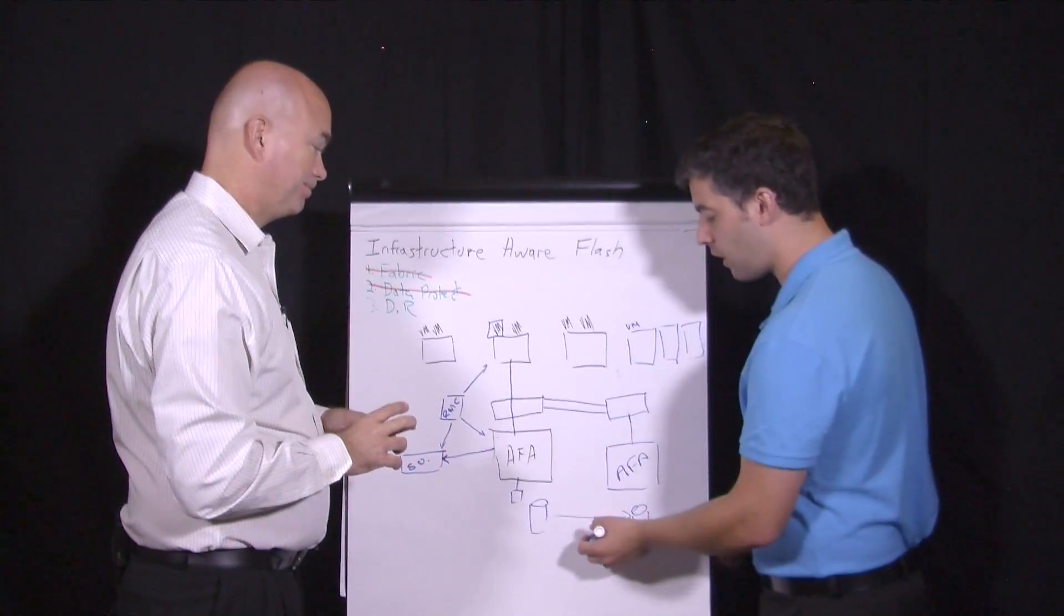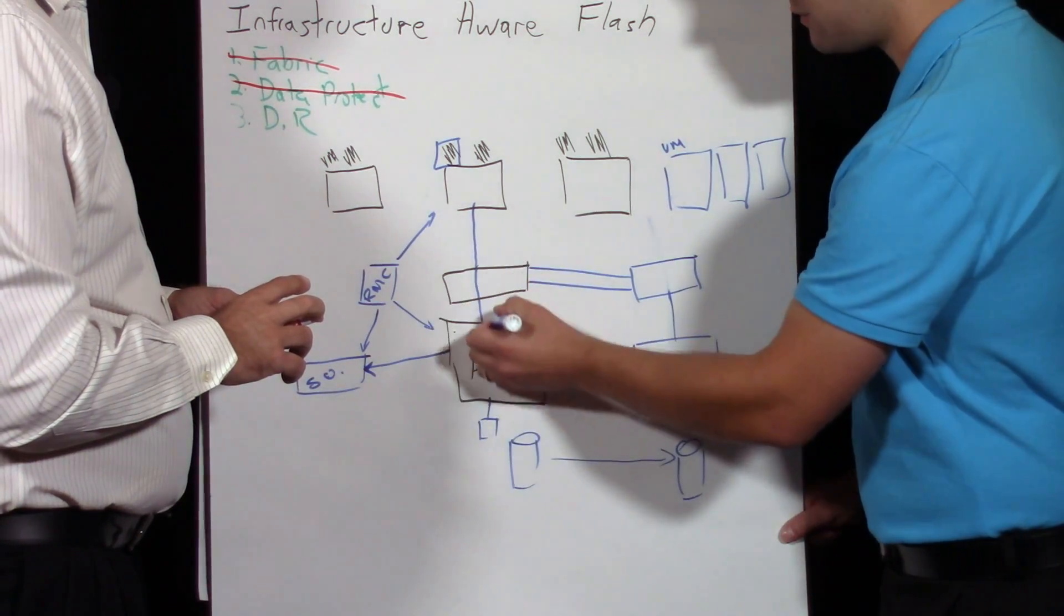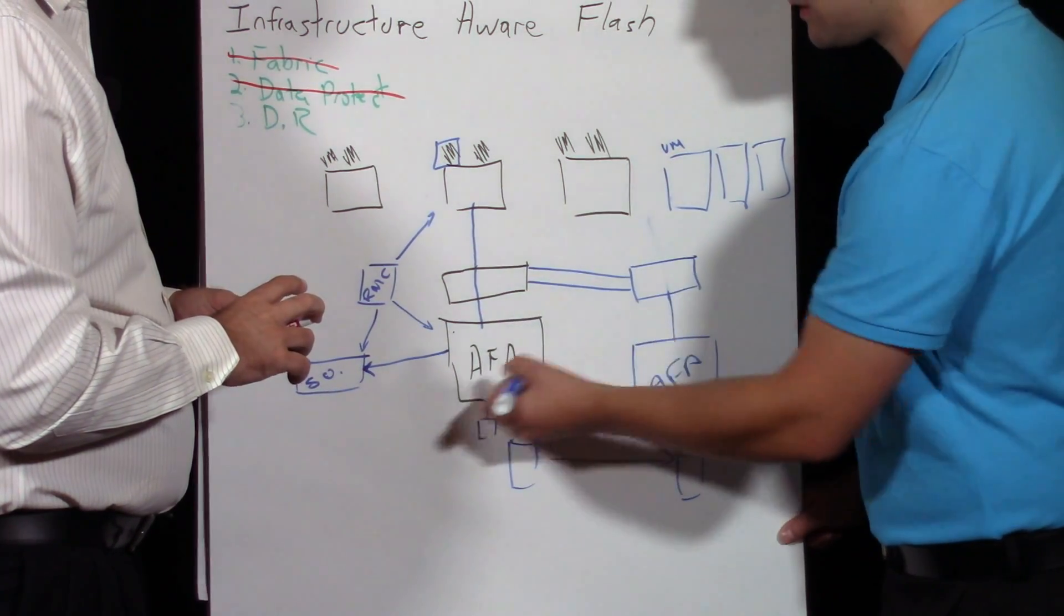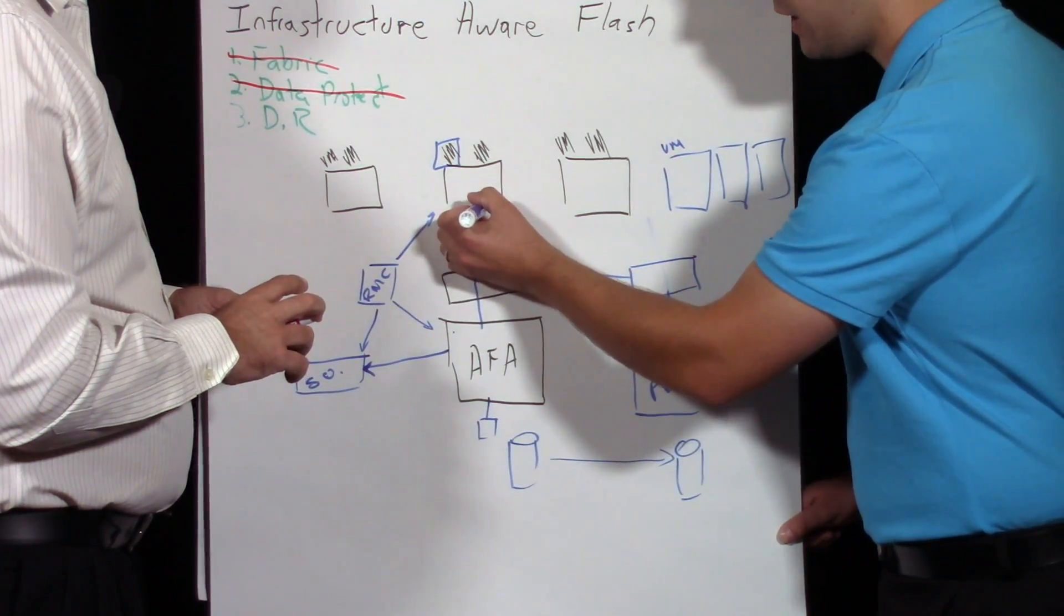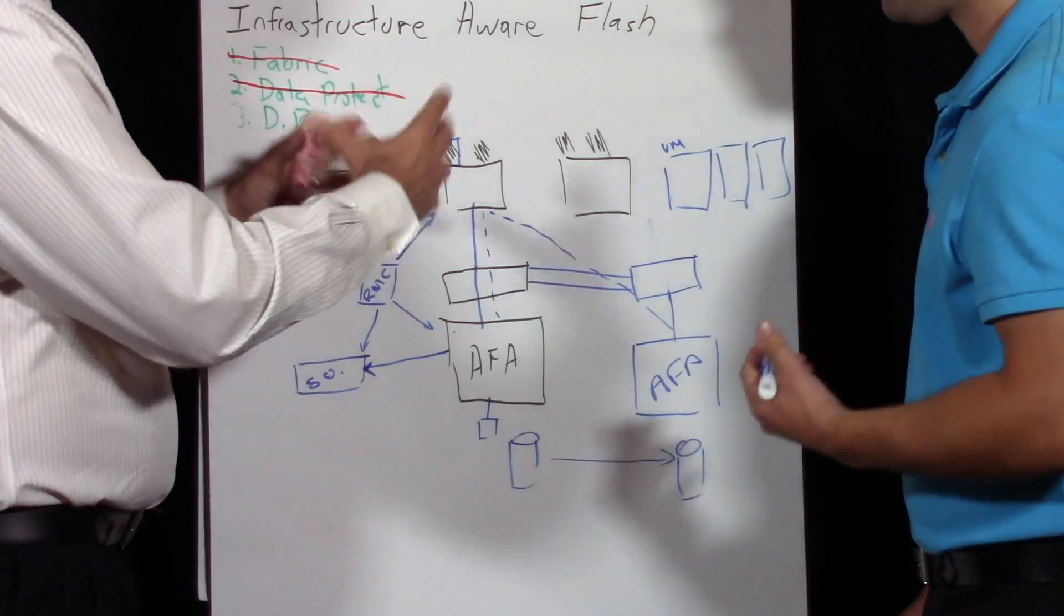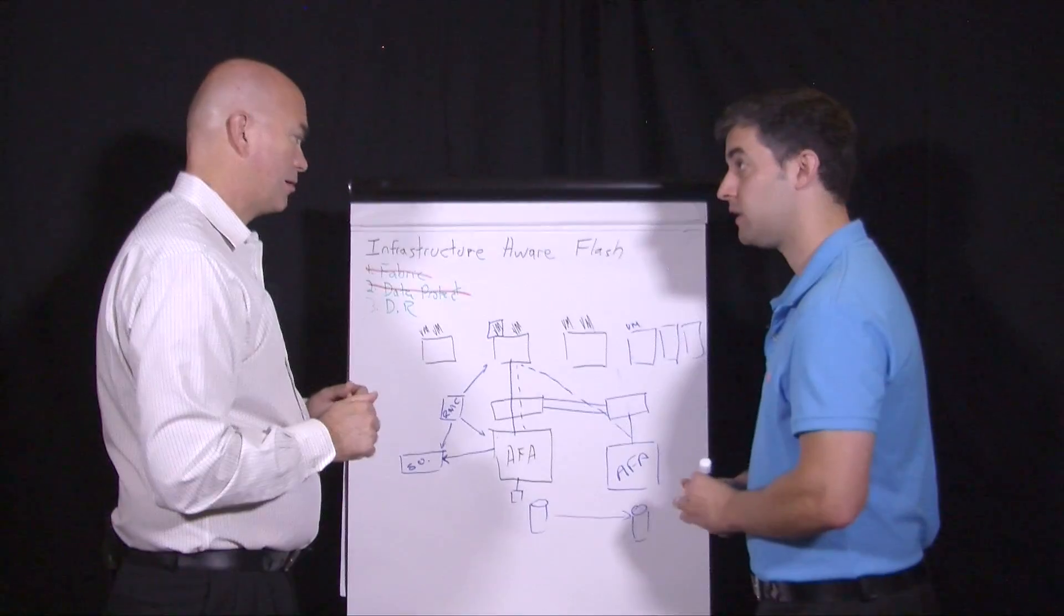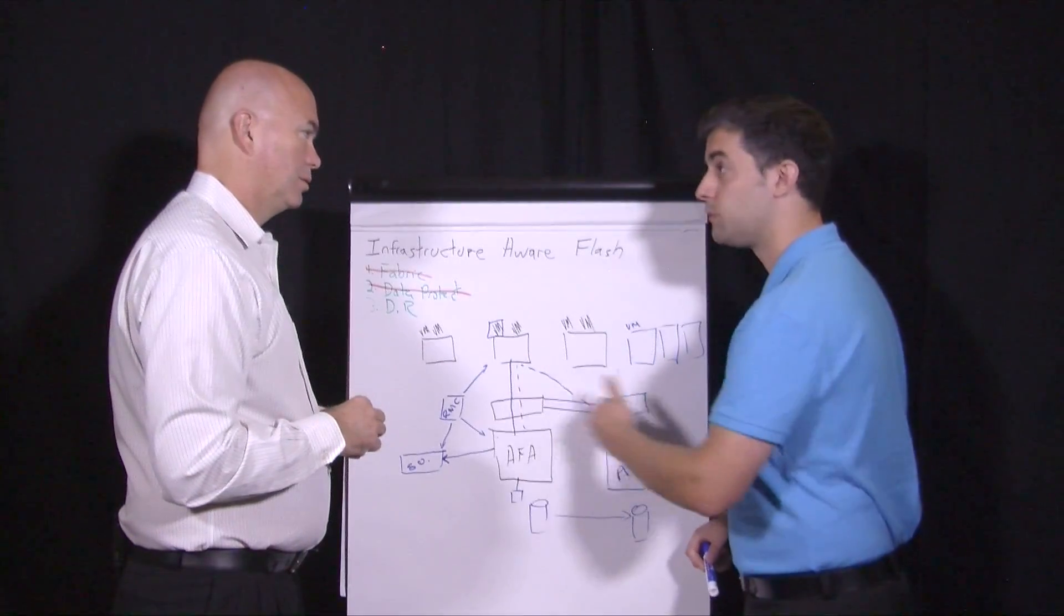That cluster has access to essentially the same data on both sides. When I want to access this volume from any host on either site, that volume is accessible from both storage arrays. As far as the host is concerned, it's seeing one volume presented from multiple locations.